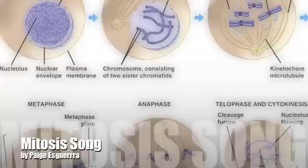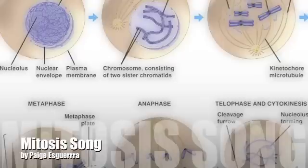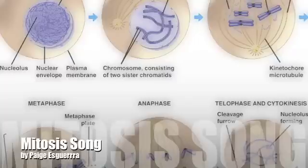Then anaphase is the next phase we enter. In anaphase, a pair of chromosomes spreads into two individual chromosomes. In telophase, the chromosomes reach the poles and they uncoil into chromatin, while the nuclear membrane reforms. And cytokinesis is where the daughter cells are split apart. Now it's almost time to restart.